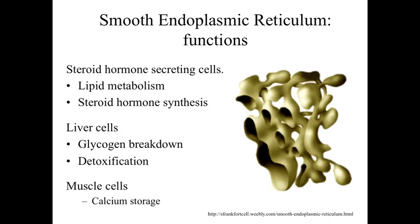Within liver cells, the smooth ER is involved with glycogen breakdown and detoxification. Muscle cells also have a well-defined smooth endoplasmic reticulum, referred to as the sarcoplasmic reticulum. This is involved with calcium storage — holding those materials until triggered release is needed to control muscle contraction.